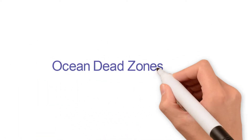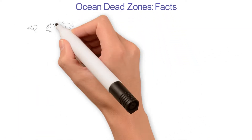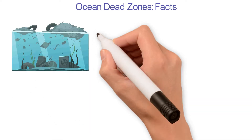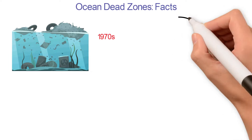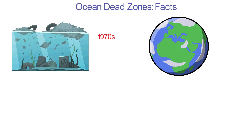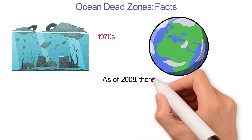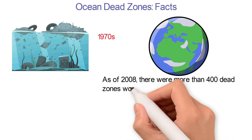Ocean dead zones have always existed, but in the 1970s, scientists first began to notice that these dead zones were becoming more widespread. In fact, the number of dead zones in the world has doubled each decade. As of 2008, there were more than 400 dead zones worldwide.